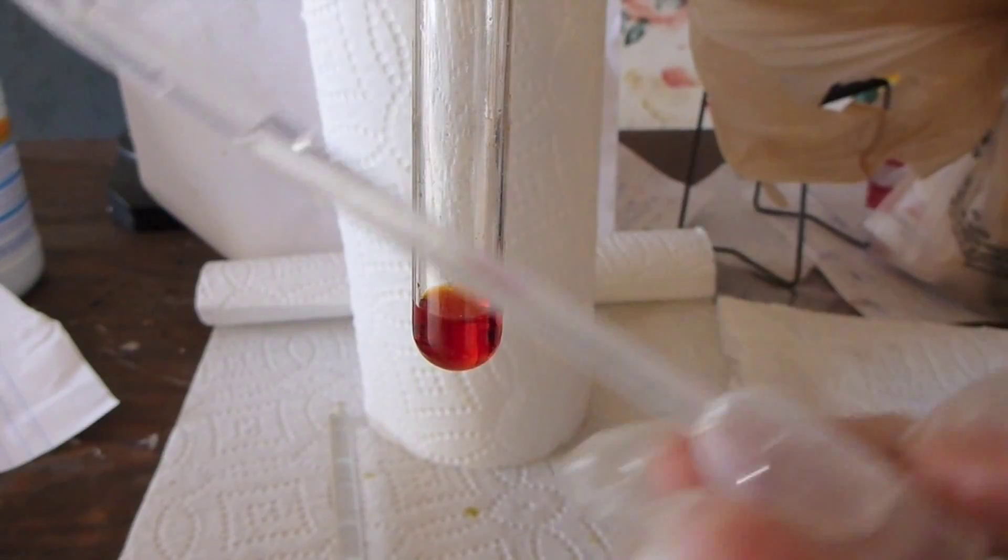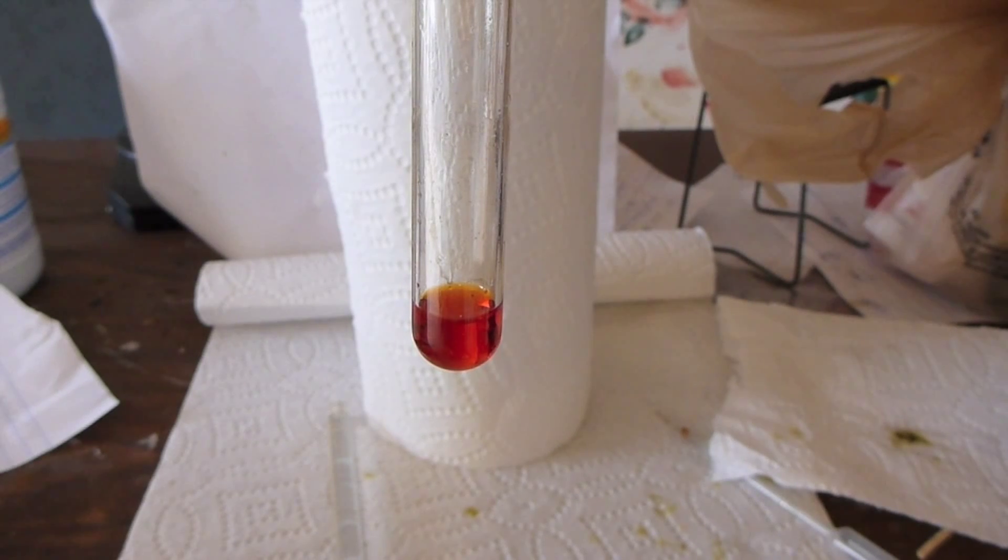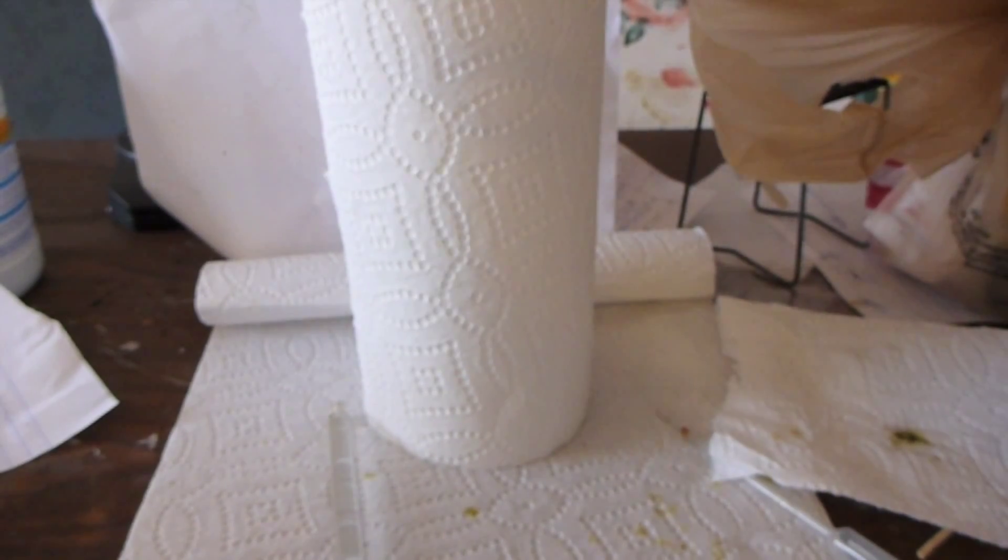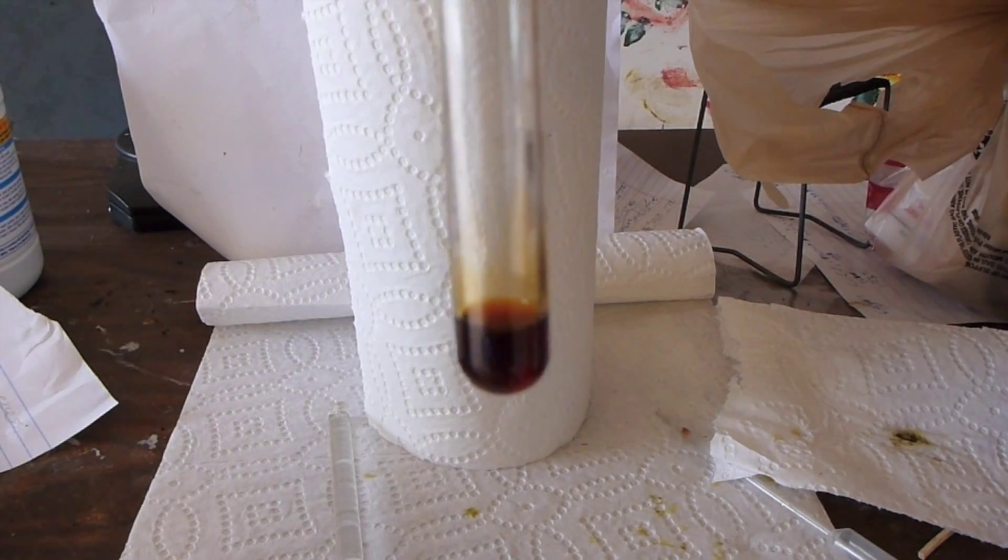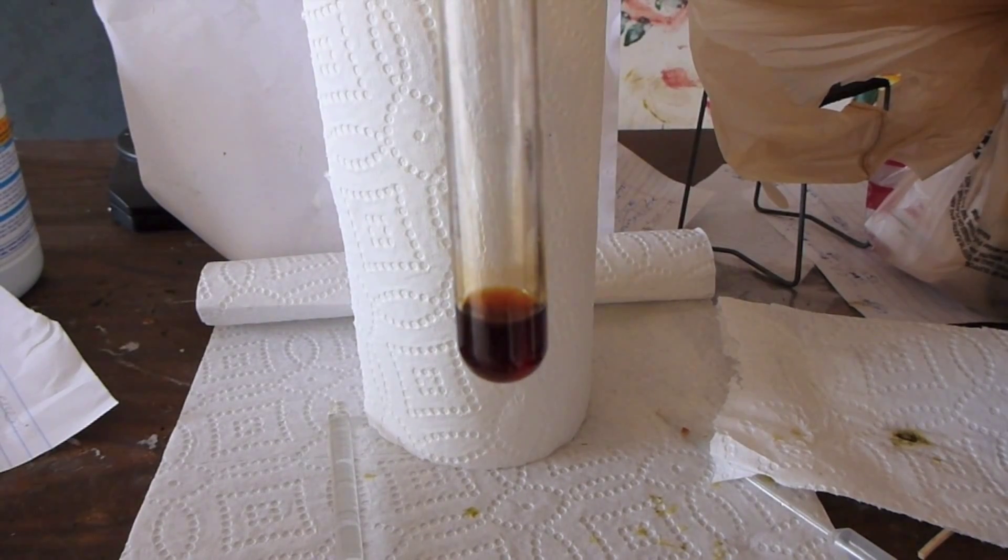All right, so here's my ruthenate starting solution. And this time, what I'm going to do is I'm going to acidify the solution. Now, the first bit of acid reacts with the hydroxide and just neutralizes the solution, and then it starts to get acidic. When it gets acidic, the ruthenate disproportionates into perruthenate and a ruthenium chloride complex, which features ruthenium in the formal oxidation state of 4 plus.